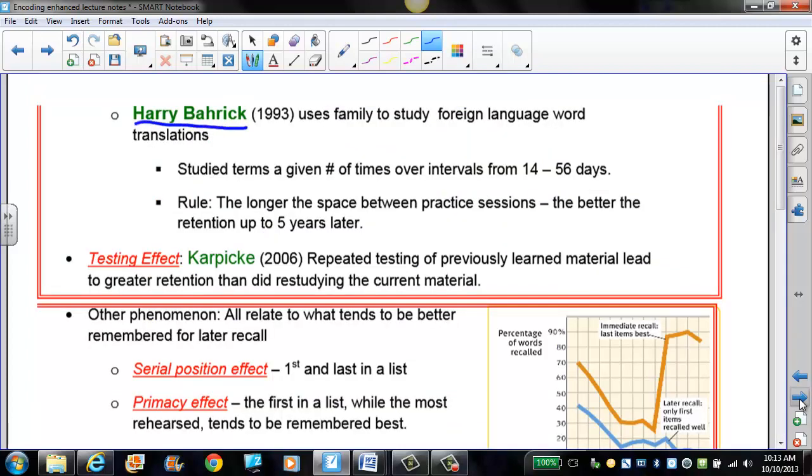Is there evidence to support this? There is. Harry Baric used his family members to study foreign language translations. And aren't you glad he wasn't your dad? He studied terms a given number of times and then over intervals ranging from 14 days later to 56 days later. And what they found was the longer the space between the initial learning and the second practice session, whether it was 14 days or 56 days, the longer the space between the first and second, the better they remember those terms five years later. So, if we learn a list of terms and we have it down perfectly and we study it 14 days later and then we don't look at those terms for another five years, or we have 56 days between the first and second time, this group remembered it much better five years later.